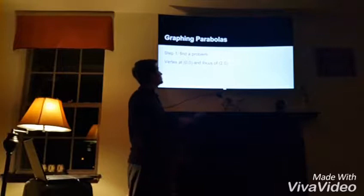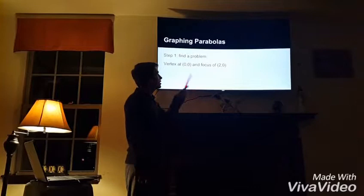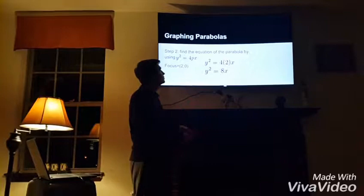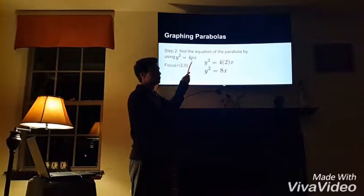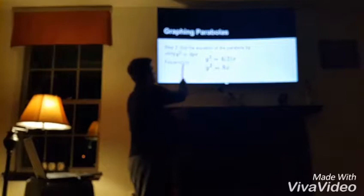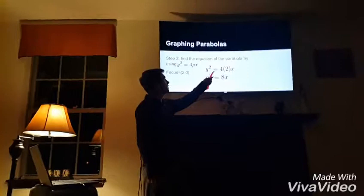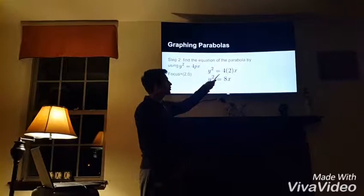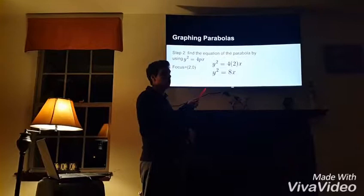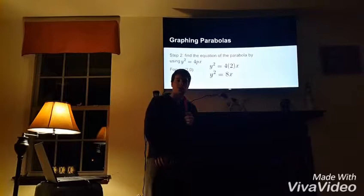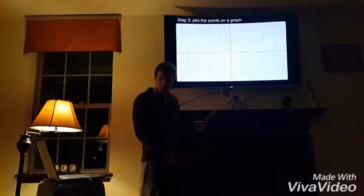Next, we will be graphing parabolas. Step 1: find the problem. You have a vertex at (0, 0) and a focus at (2, 0). Step 2 is to find the equation of the parabola using y squared equals 4px. The focus is (2, 0), so the x value of your focus, 2, is p. When you plug in 2, you get y squared equals 4 times 2 times x. Multiplying 4 times 2 gives you your final equation: y squared equals 8x. When you plug it into Desmos, this is what your graph looks like.